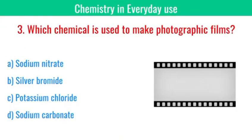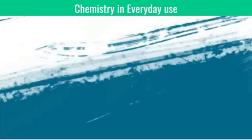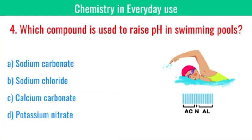Which chemical is used to make photographic films? The correct answer is silver bromide. Which compound is used to raise pH in swimming pools? The correct answer is sodium carbonate.